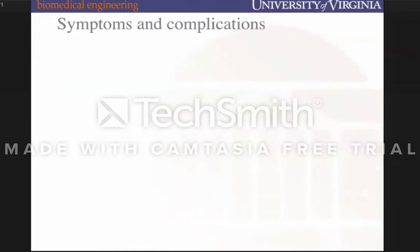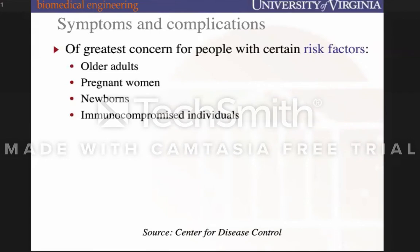Symptoms and complications are of greatest concern for people with certain risk factors: those who are immunosuppressed, older adults, pregnant women, newborns, and immunocompromised individuals. Especially for pregnant women, doctors designate strict dietary restrictions — no raw sushi, no deli meat, no uncooked deli meat, and no soft cheeses from unpasteurized milk. Typically listeriosis is foodborne and takes root in people who are immunosuppressed or immunocompromised.